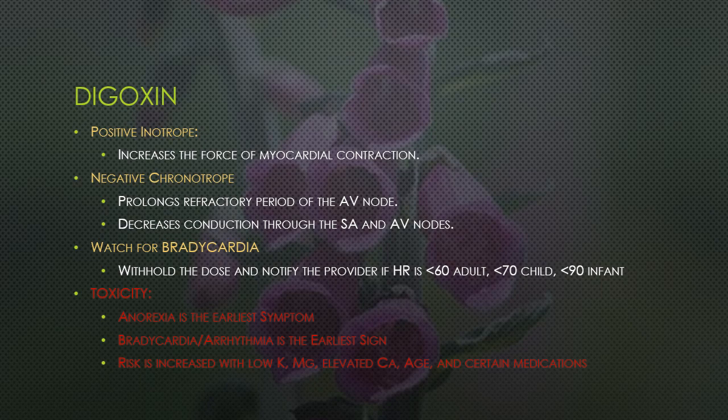Digoxin is a cardiac glycoside — a positive inotrope that increases the force of myocardial contractions — and it's a negative chronotrope. It prolongs the refractory period of the AV node and decreases conduction through the SA and AV nodes, which slows down the heart rate. Auscultate an apical pulse for a full minute prior to administration; withhold the dose and notify the provider if the heart rate is less than 60 for an adult, less than 70 for a child, or less than 90 for an infant. Digoxin toxicity is possible — anorexia is the earliest symptom and bradycardia or arrhythmias are the earliest sign. Risk of toxicity is increased in patients with low potassium, low magnesium, elevated calcium, elderly patients, poor renal clearance, or those on certain antibiotics or antiarrhythmics.